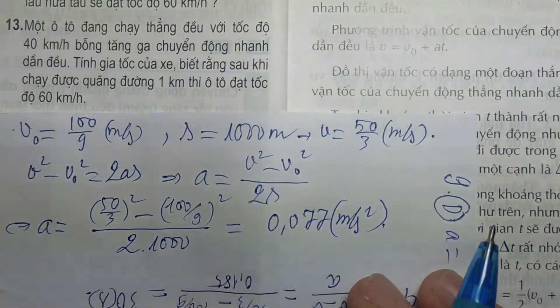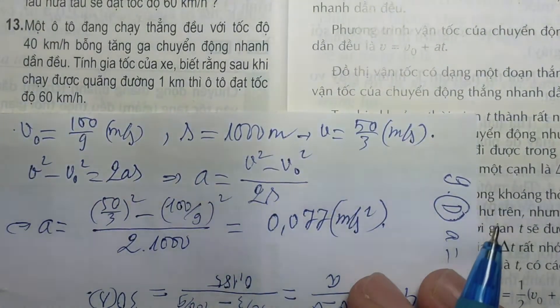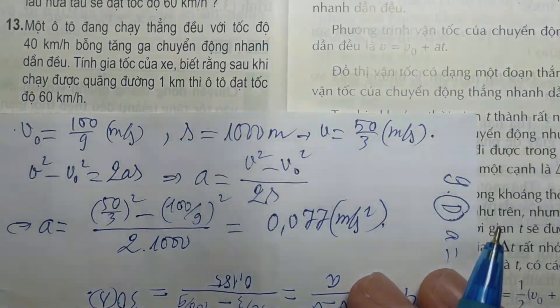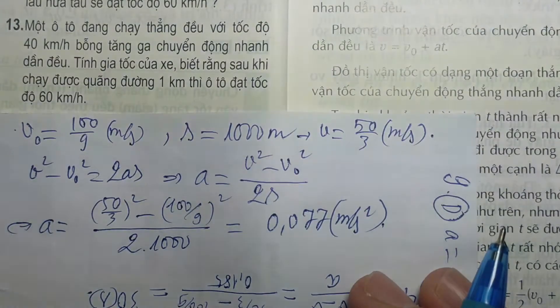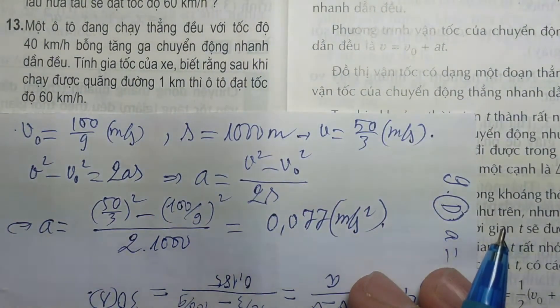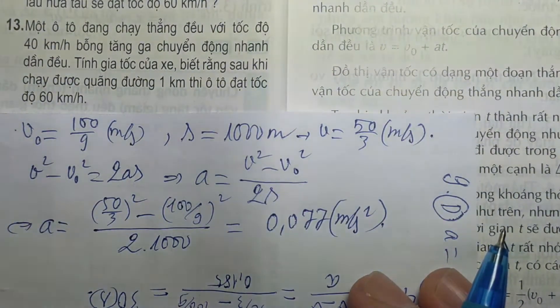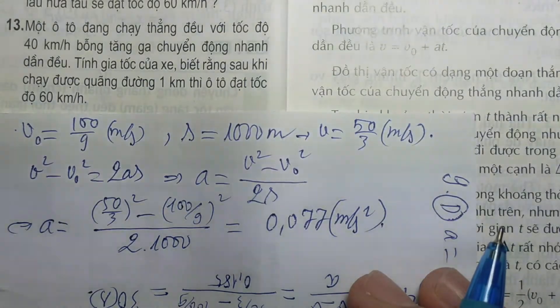Bài 13 không khó. Các con nhớ: km đổi sang mét là nhân 1000; km/h đổi sang m/s là chia 3,6.